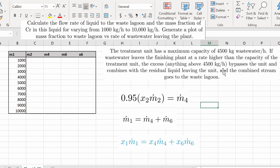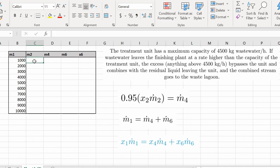If you're following along with the Felder problem, we just finished part A and B, and now we're doing part C, which is to calculate the flow rate of the liquid to the waste lagoon and the mass fraction of the chromium in this liquid for varying from 1,000 to 10,000 kg per hour. So I made this nice little table in Excel varying it from 1,000 to 10,000. We have an if statement. If m1 is less than or equal to 4500, then m2 equals m1. And if m1 is greater than 4500, then m2 is just 4500. So now from 5,000 and above, m2 is going to be 4500.